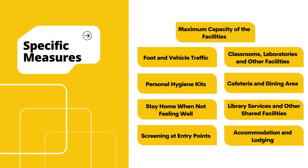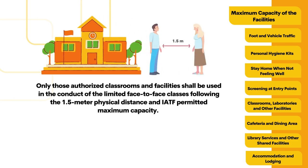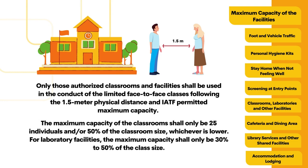The subsequent measures are also to be implemented to bolster safety and health protocols. Only those authorized classrooms and facilities shall be used in the conduct of limited face-to-face classes following the 1.5-meter physical distance and IATF-permitted maximum capacity. The maximum capacity of classrooms shall only be 25 individuals and/or 50% of the classroom size, whichever is lower. For laboratory facilities, the maximum capacity shall only be 30% to 50% of the class size.